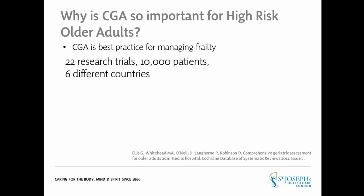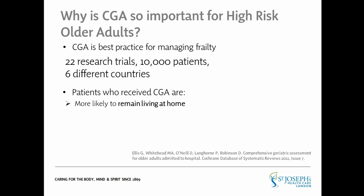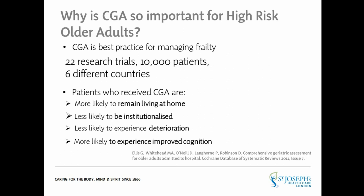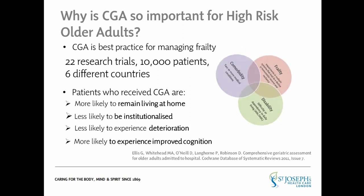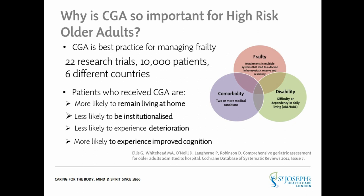Twenty-two research trials with over 10,000 patients in six different countries suggest that older adults who receive a comprehensive geriatric assessment are more likely to remain living in their home longer, are less likely to be institutionalized or hospitalized, are less likely to experience deterioration, and are more likely to experience improved cognition. In addition, specialized comprehensive geriatric assessment has been found to be most beneficial for older adults experiencing frailty together with multiple comorbidities and functional decline or disability. This aligns closely with the subpopulation of older adults identified as high risk for loss of independence through standardized risk screening with the AUA.